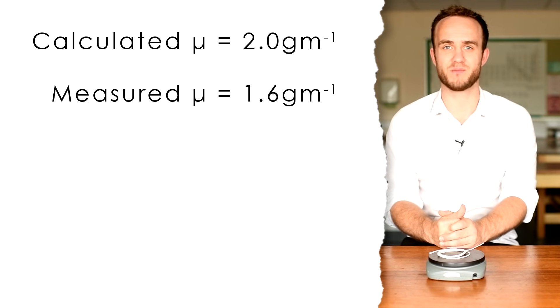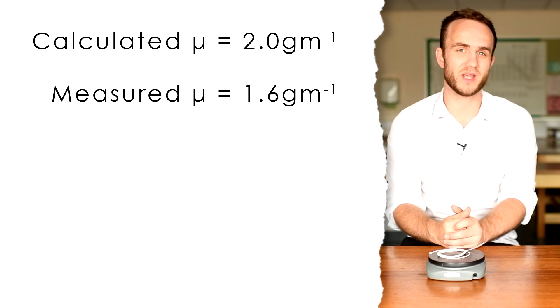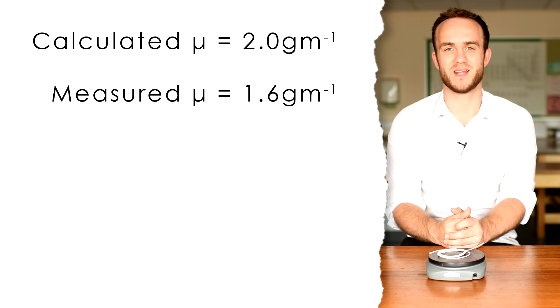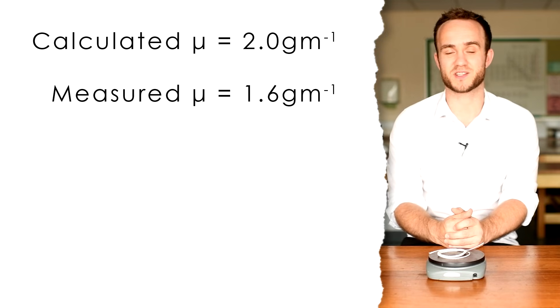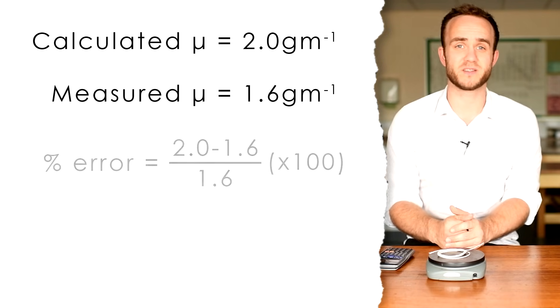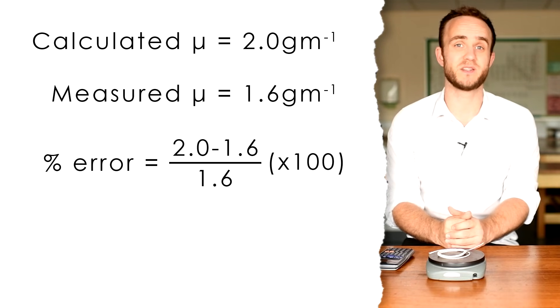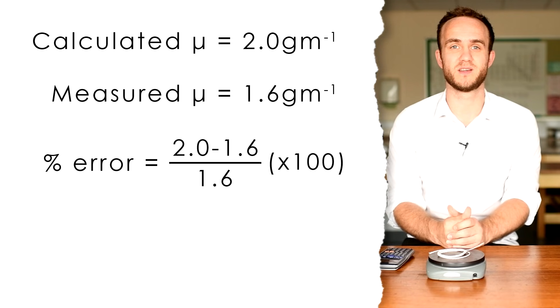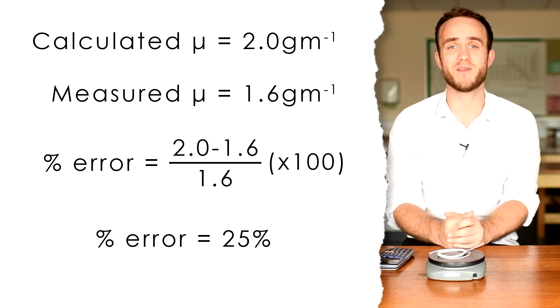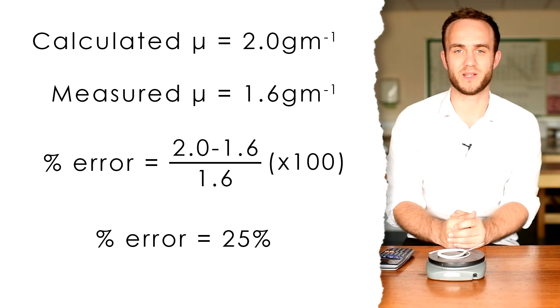So, that means that our 2 grams per meter is slightly off. But that's okay, because we're always going to have uncertainties and an error in our experiments. That's just the nature of experiments. What we can do is calculate the percentage difference between the two values. What we do is take the difference between the values, that's 2 take away 1.6, divided by the actual value, 1.6, times 100. And that gives us 25%. We have a 25% error in our calculated value for mu and the actual value for mu.